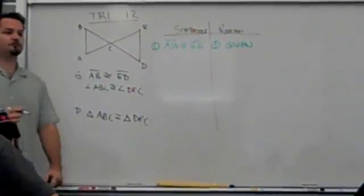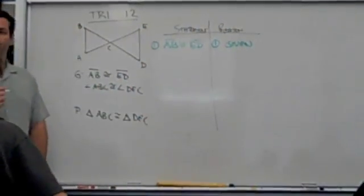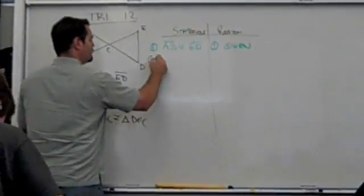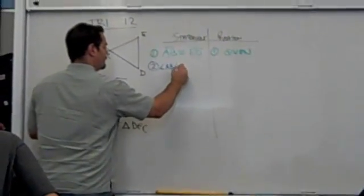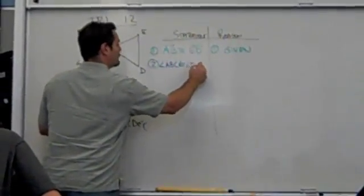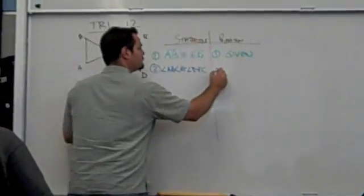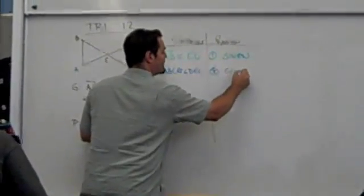All right. Second step. Angle ABC is congruent to DEC. Reason for that. Also given, boy this one's easy so far.